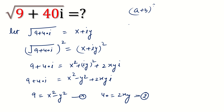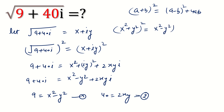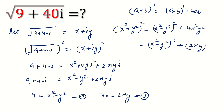We know the formula: (a plus b) whole squared is equal to (a minus b) whole squared plus 4ab. So we can say x squared plus y squared whole squared is equal to x squared minus y squared whole squared plus 4 times x squared y squared, which equals x squared minus y squared whole squared plus 2xy whole squared.